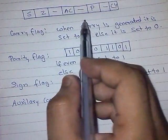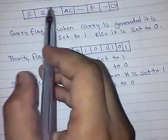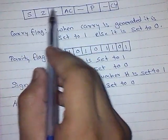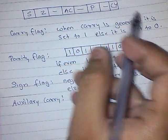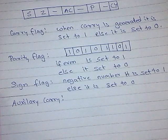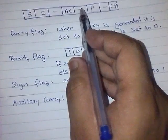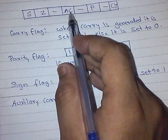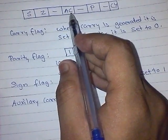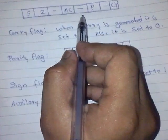In auxiliary carry flag, this is total of 8 bit: 1, 2, 3, 4, 5, 6, 7, 8. In the operation, when there is a carry generated from D3 to D4 then we say this as, then there is an auxiliary carry generated. Suppose in the operation, we need to take any number from here.